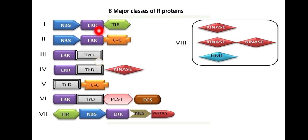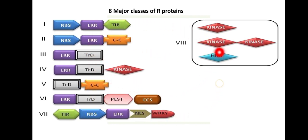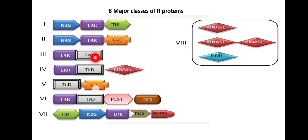There are many motifs such as NBS motif, LRR motif, TIR motif, CC motif, and TRD motif. These motifs constitute the different classes of R genes — total eight classes. In these eight classes, you may observe that the LRR region, that is leucine rich repeat, is mostly present in all classes; it is a common motif. The eighth class contains kinases, meaning enzyme, so the last R gene class is an enzymatic R gene. The example of that is HM1.